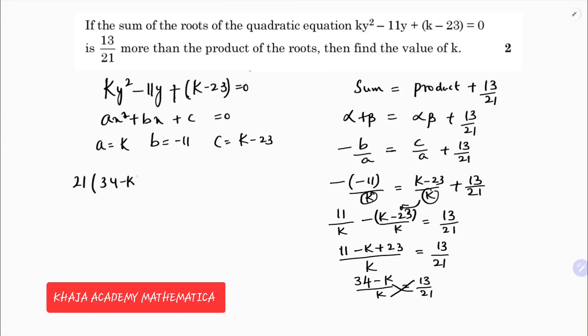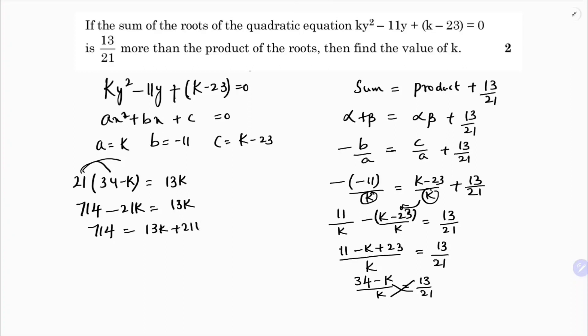So now here 21 times 34, see I will multiply 21 into 34 and 21 into k. 21 times 34 is 714 minus 21k equals 13k. So 714 equals 13k plus 21k.